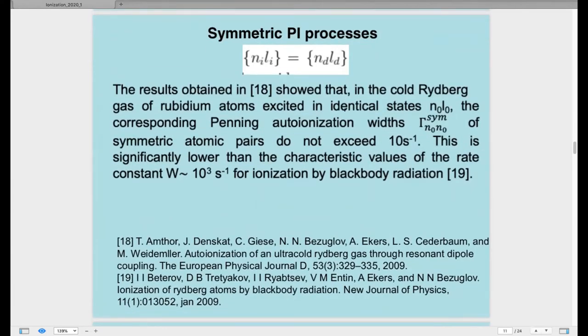Let's talk a little bit about symmetric Penning ionization processes when I and D quantum numbers are equal. The results obtained earlier showed that in cold Rydberg gas of rubidium atoms excited in identical states, the corresponding Penning ionization widths of symmetric atom pairs do not exceed 10^-10. This is significantly lower than the characteristic values of the rate constant W~10^3 for ionization by blackbody radiation, so symmetrical processes are not influencing ionization significantly.